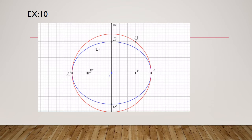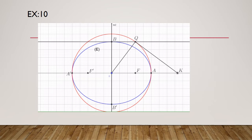Now we construct the directrix. Since OQ is perpendicular to QK, we draw line L passing through Q and perpendicular to OQ. This line L cuts the focal axis at point K. The directrix D passes through K and is perpendicular to AA'. The other directrix D' is obtained by symmetry with respect to O.